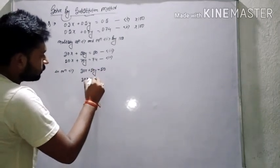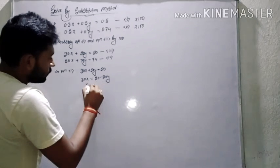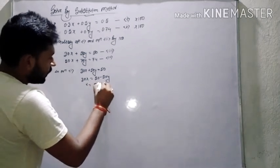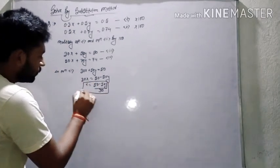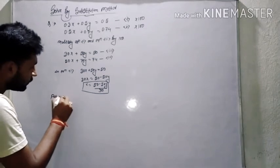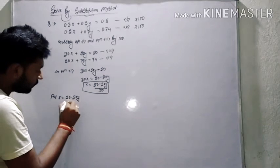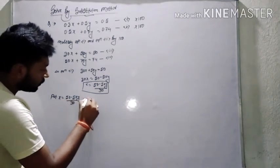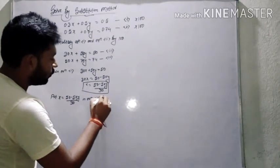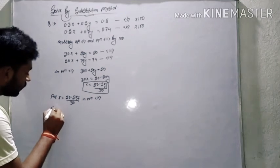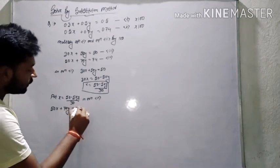Then 30x is equal to 50 minus 50y. Then x is equal to 50 minus 50y divided by 30. Now put x equals 50 minus 50y over 30 in Expression 4: 50x plus 70y is equal to 74.